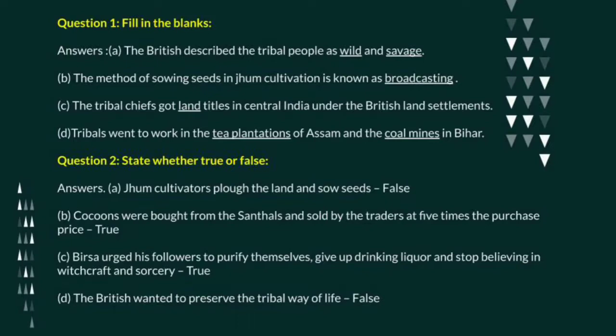The first question is fill in the blanks. I have given the answers directly. Answer a: the British described the tribal people as wild and savage. Answer b: the method of sowing seeds in jhum cultivation is known as broadcasting.